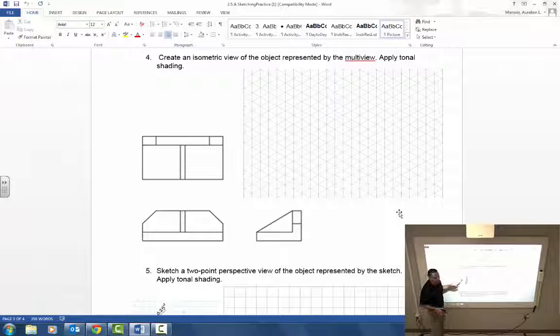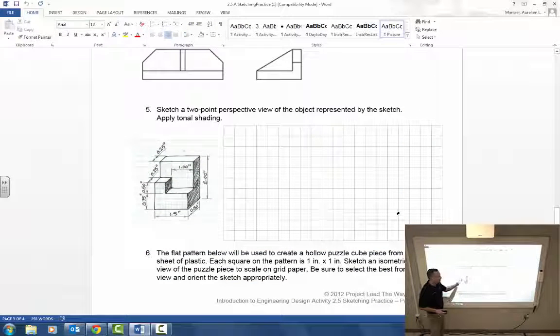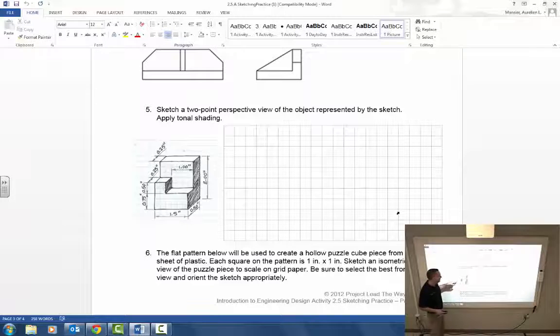A two-point perspective of this object here. Remember that when we do two points, we're going to deal with a front edge rather than a front surface. So you can either deal with this edge as your starting point, or this edge. Make sure you pick two vanishing points. And if using these sizes would help you out rather than using the grid spacing, you can do that as well.